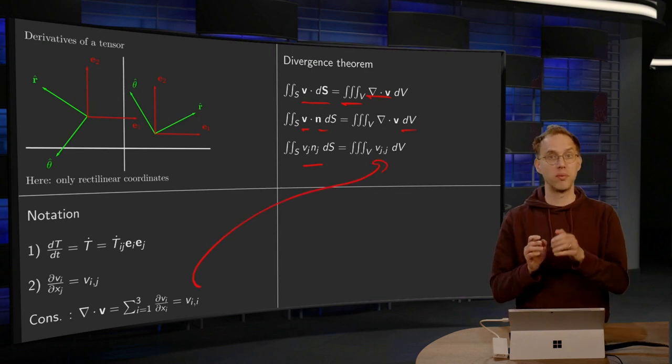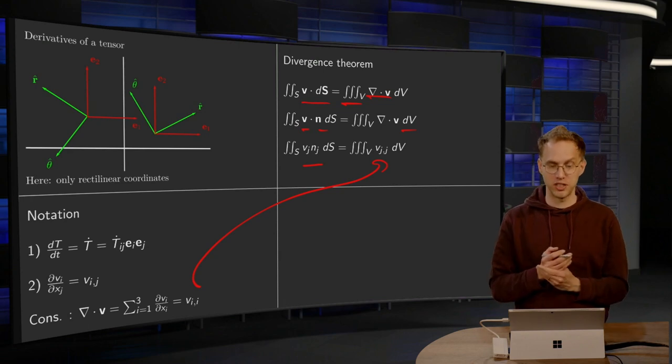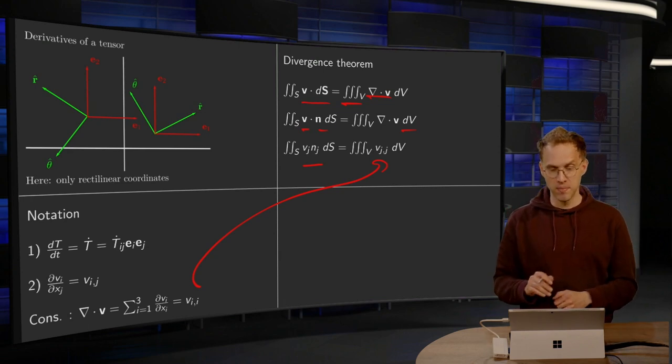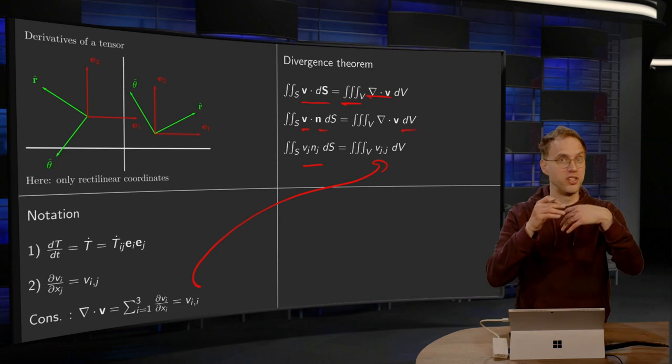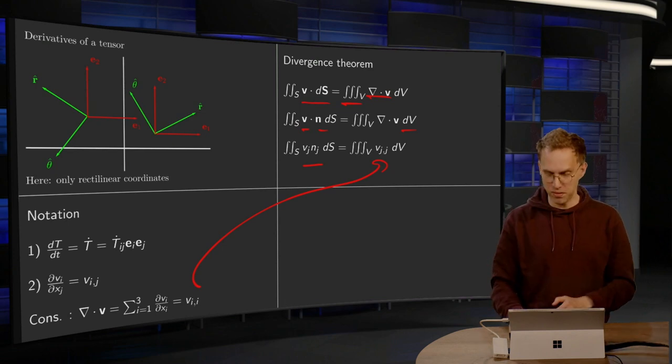And for the divergence we just had, we could rewrite this as v_i,i, or use a different summation index, v_j,j. So that's the divergence theorem as you know. Nothing new over here.